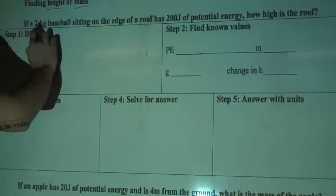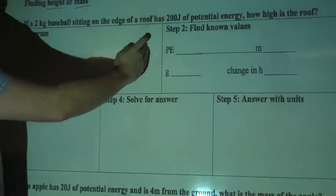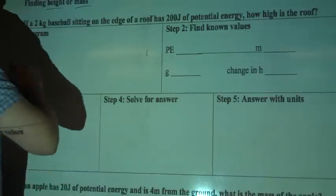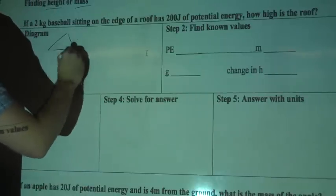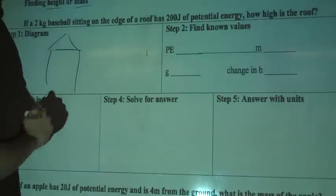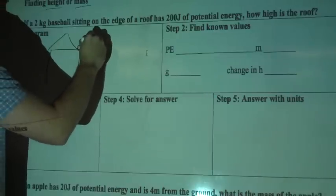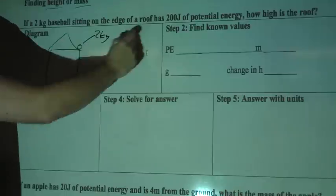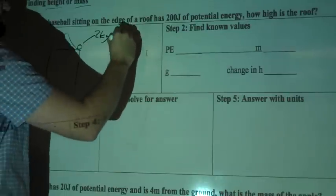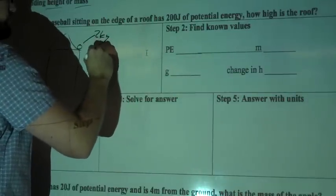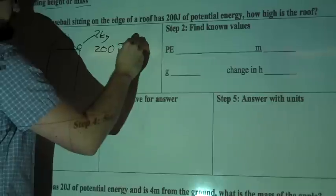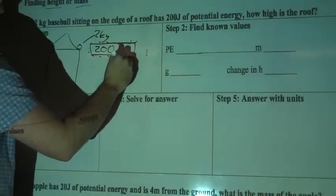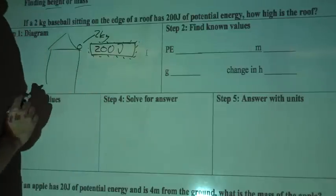So this one, a 2-kilogram baseball sitting on the edge of a roof has 200 joules of potential energy. How high is the roof? Let's start off, let's draw our house here, apartment building, whatever. We've got a 2-kilogram baseball, so I'll label that 2 kg, and it has 200 joules of potential energy. So I'm going to write 200 J and put it in a box. You can put a little energy signs around it to show that's potential energy up here.